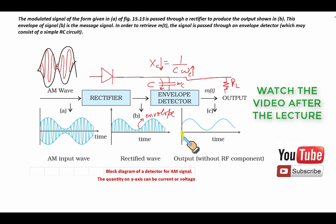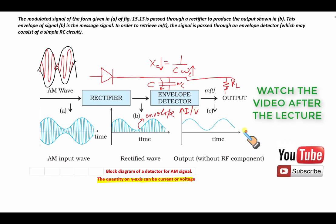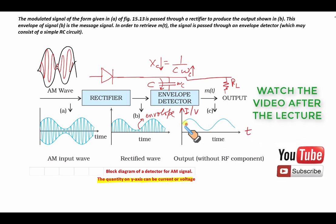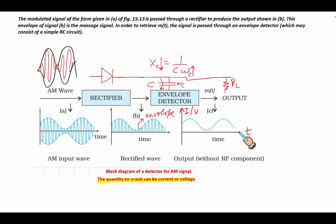The quantity on the y-axis can be current or voltage varying with respect to time t. Hence the message signal was transferred at the transmitter and the message signal is recovered at the receiver.